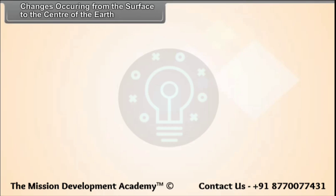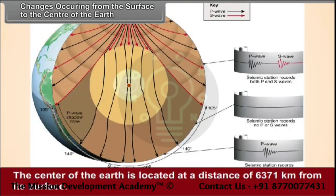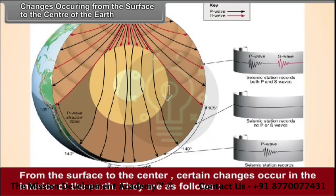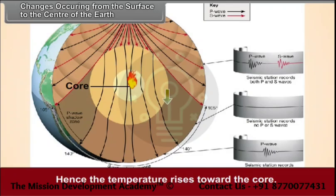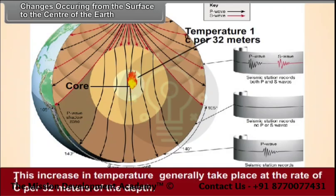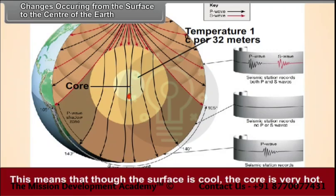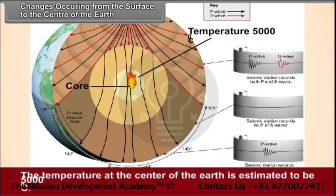Changes occurring from the surface to the center of the earth. The center of the earth is located at a distance of 6,371 kilometers from its surface. From the surface to the center, certain changes occur in the interior of the earth. The process of cooling of the earth started from the surface. In the interior of the earth, the temperature is higher. Hence, the temperature rises towards the core. This increase in temperature generally takes place at the rate of 1 degree Celsius per 32 meters of depth. Though the surface is cool, the core is very hot. The temperature at the center of the earth is estimated to be 5,000 degrees Celsius.